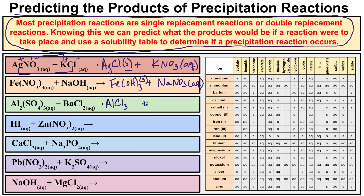Next we have AlCl3 reacting with BaSO4 in solution. Looking at the periodic table: aluminum chloride dissolves in water — it's aqueous. And if we look at barium sulfate, here's barium — slide over to sulfate — it says this will not dissolve in water. So barium sulfate is going to be your precipitate.